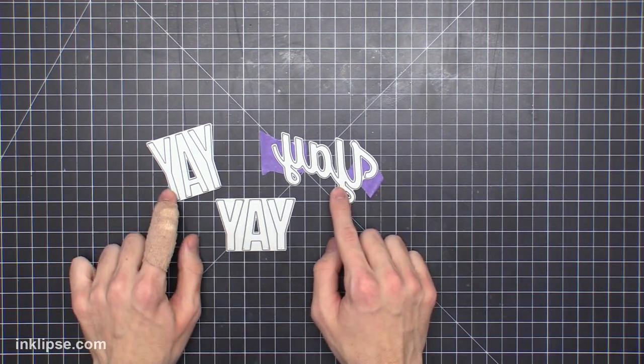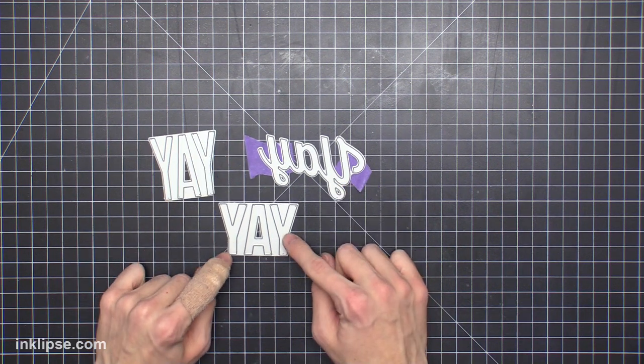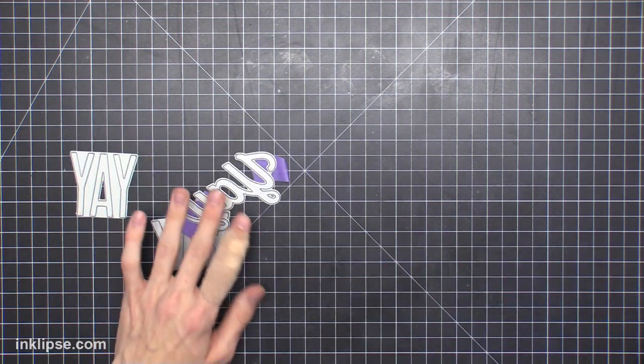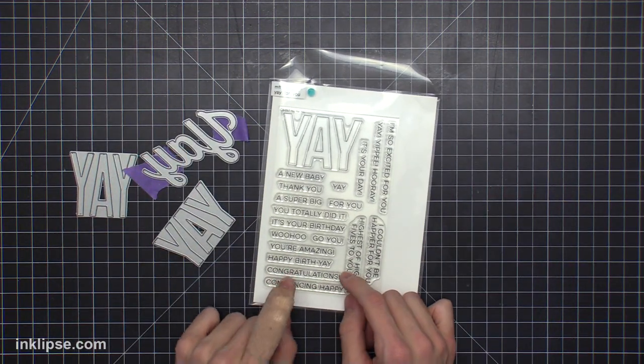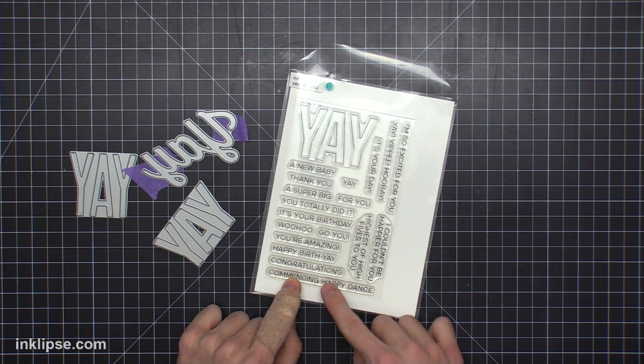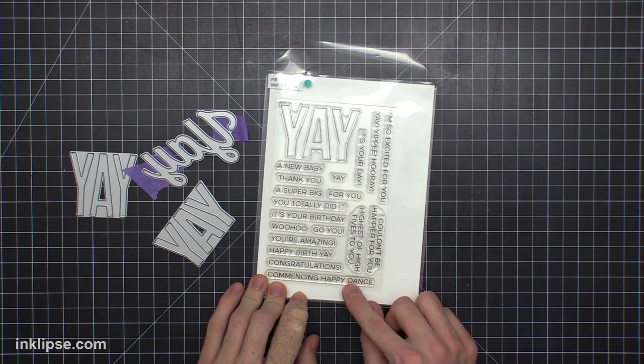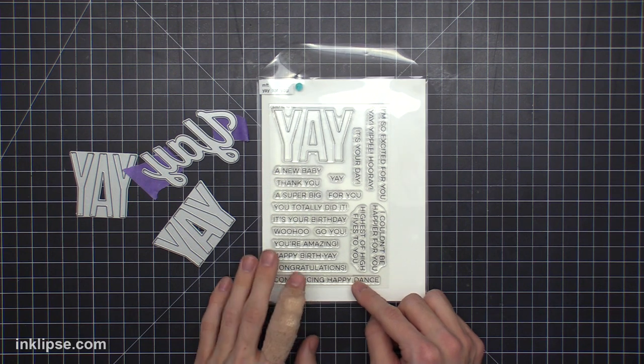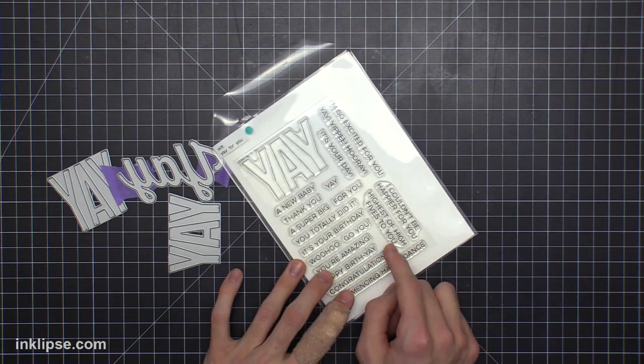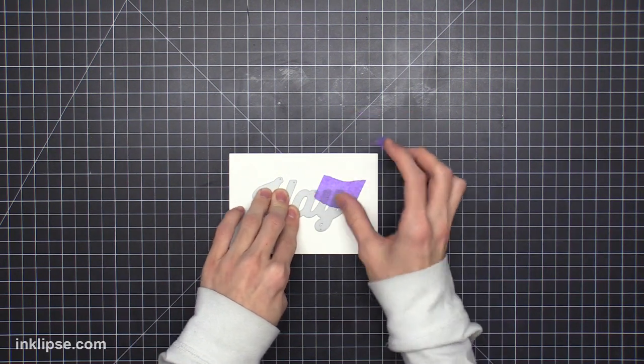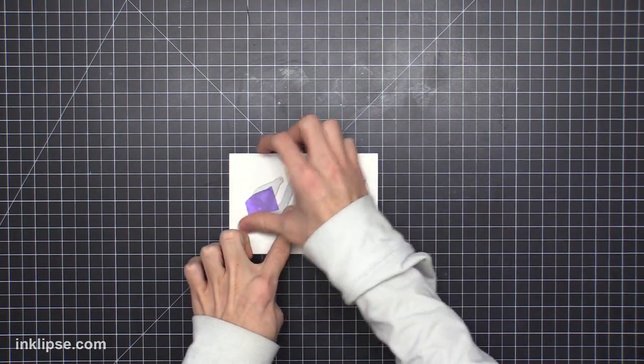So for the front panel, I'm going to be die-cutting a yay word out of it to kind of create a little window there. I'm using this scripty yay sentiment from the So Many Ye's die set, and I really love those dies because they kind of cover a card, but it also has this extra stamp that you can buy separately. I really love the sentiments that go along with it, like the commencing happy dance and the highest of high fives to you. That's really unique as well.